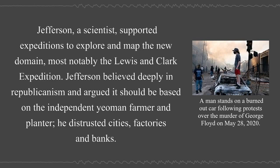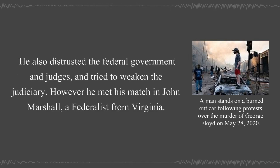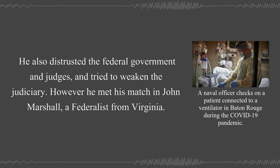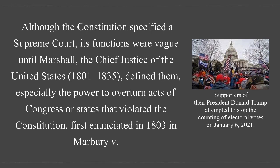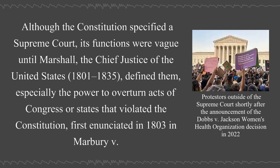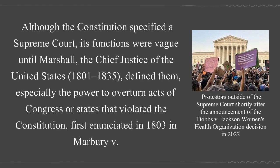Jefferson believed deeply in republicanism and argued it should be based on the independent yeoman farmer and planter. He distrusted cities, factories, and banks, as well as the federal government and judges, and tried to weaken the judiciary. However, he met his match in John Marshall, a Federalist from Virginia. Although the Constitution specified a Supreme Court, its functions were vague until Marshall, the Chief Justice of the United States (1801–1835), defined them, especially the power to overturn acts of Congress or states that violated the Constitution, first enunciated in 1803 in Marbury v. Madison.